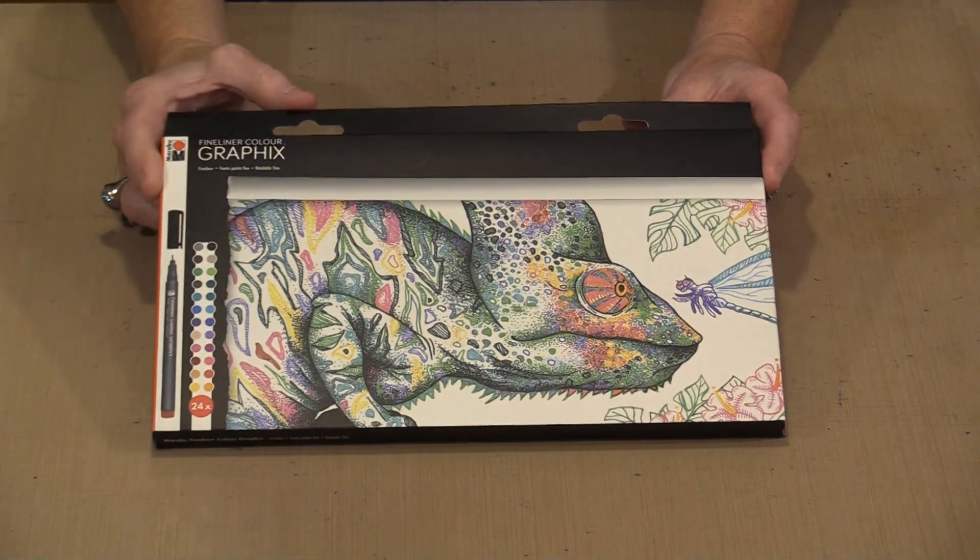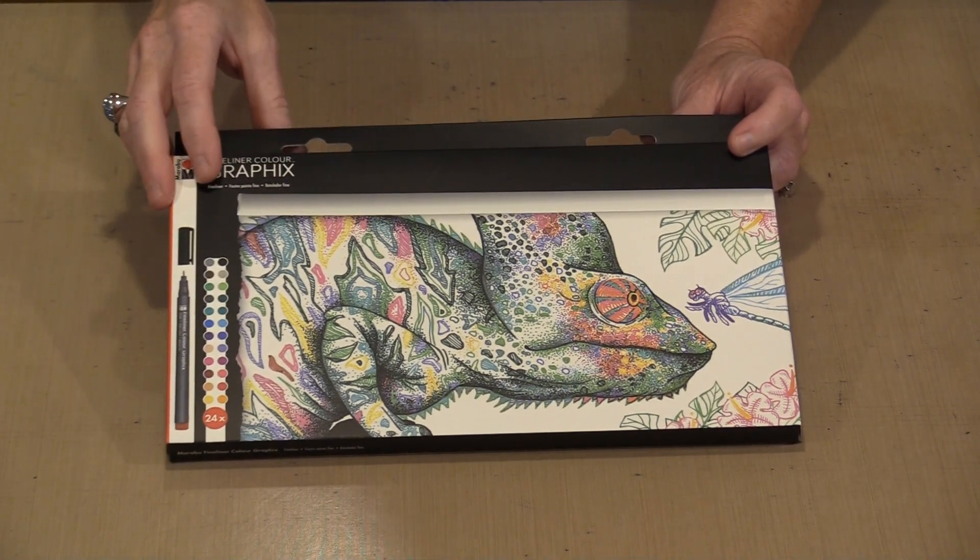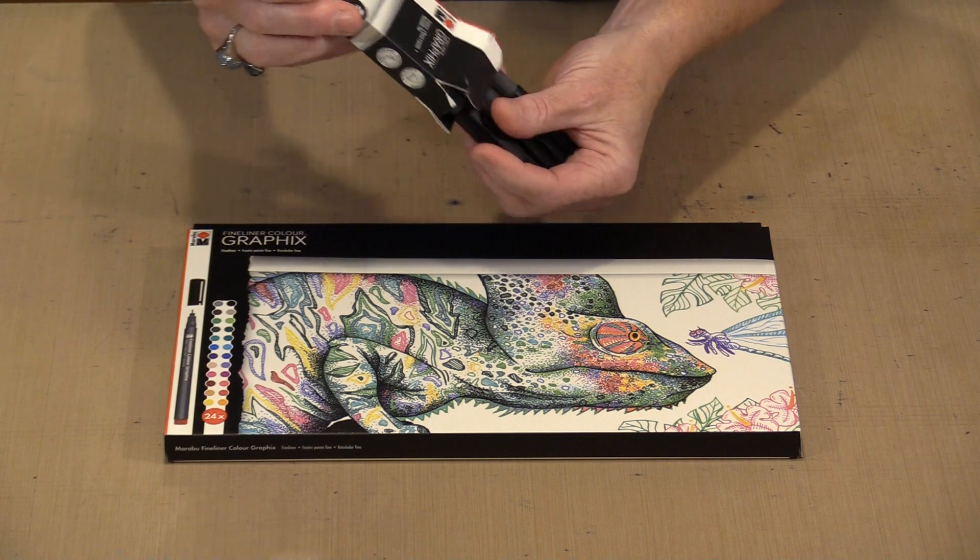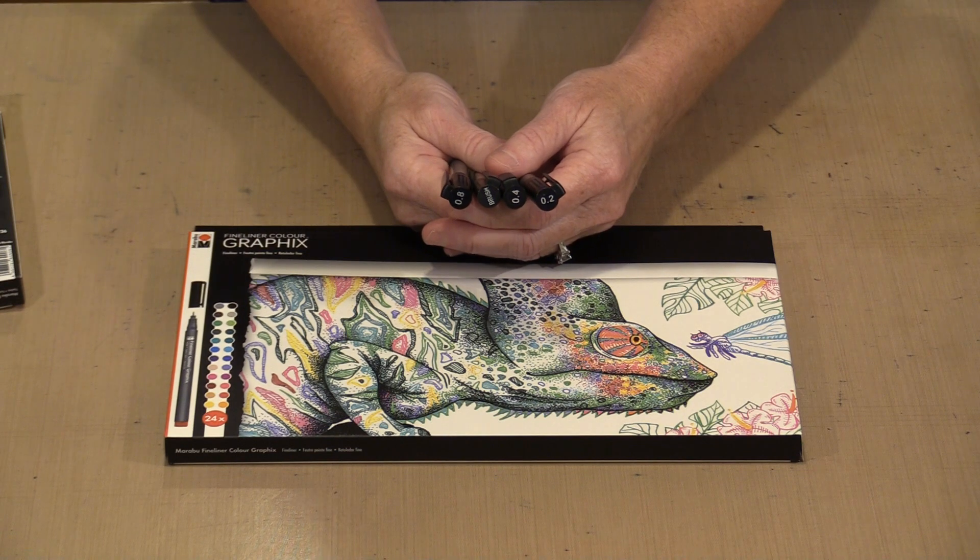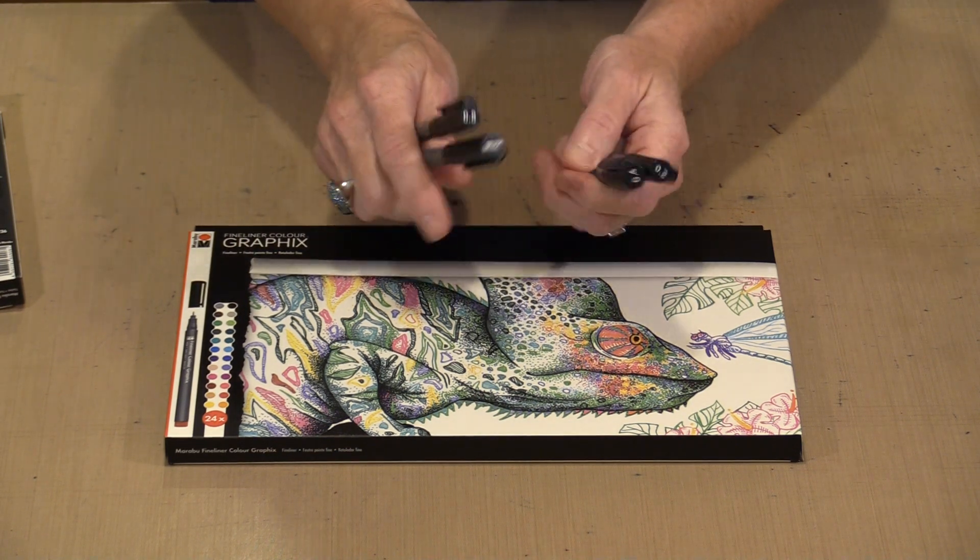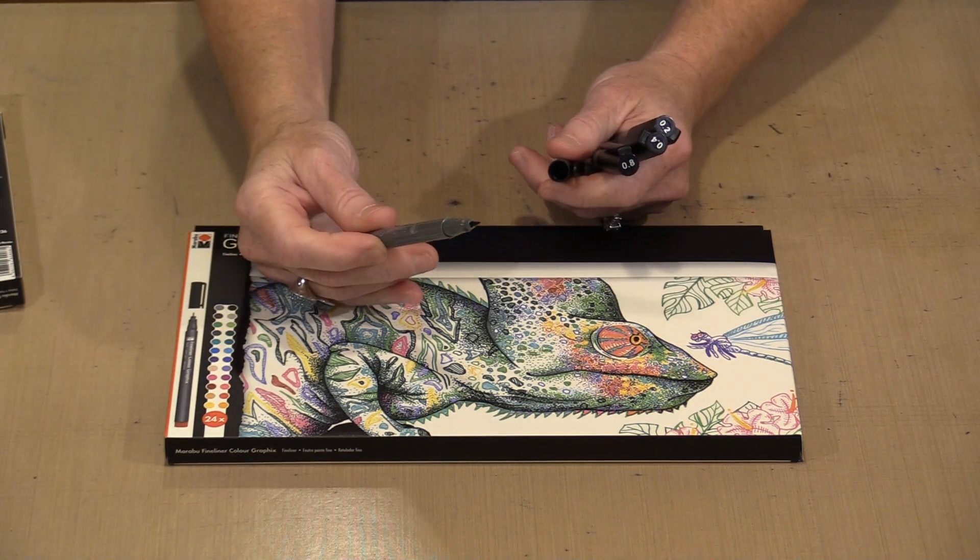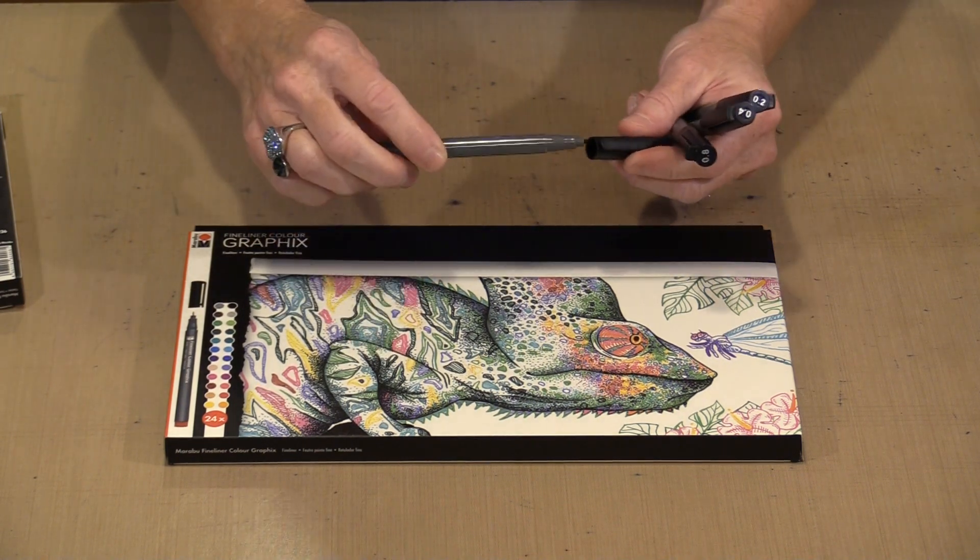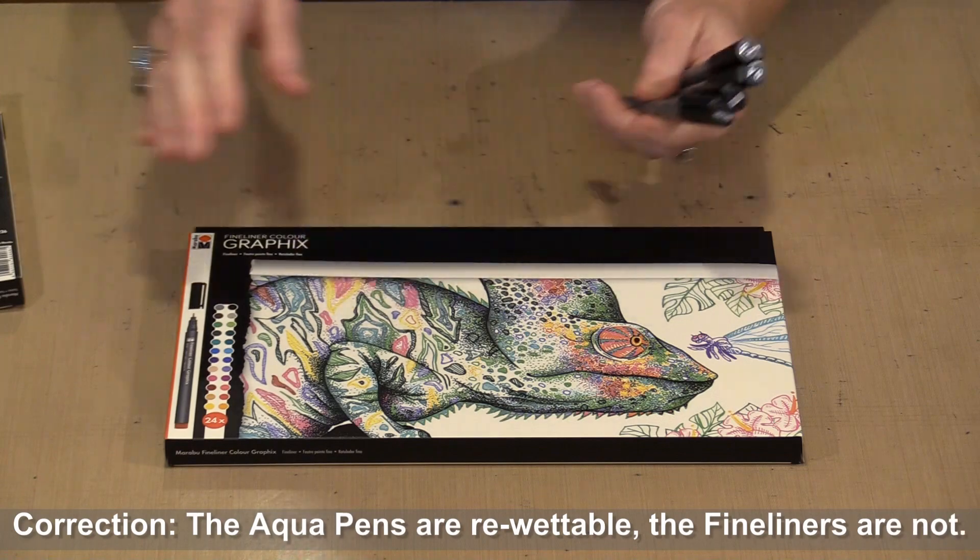There are 24 colors in the fineliner set. This is the set that includes all 24 colors. There also is a set that includes four black pens. Now the thing to bear in mind with these pens, all of these have a 0.5mm tip. Here you have a 0.2, a 0.4, and a 0.8mm, and a brush pen. The thing to remember is, this brush pen looks the same as the brush pen from the aqua pen line. Different. This is fineliner ink and it's going to stay put when it's dry, so that you don't have to worry about coming back and changing it. So while the aqua pens are re-wettable, the aqua inks are not. They are going to stay put.